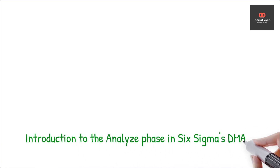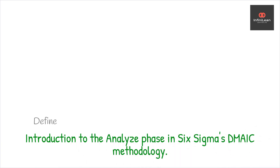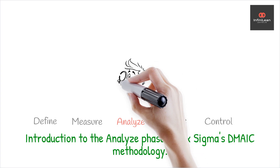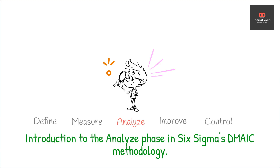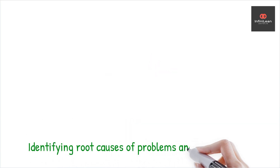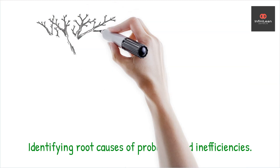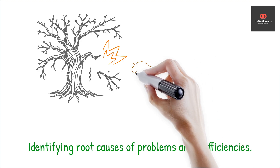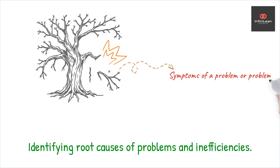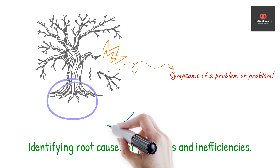Welcome to our deep dive into the Analyze Phase of Six Sigma — this is where the rubber meets the road in our journey to process excellence. The Analyze Phase is the third step in the DMAIC methodology. During this phase, we focus on identifying the root causes of problems and understanding why defects occur. The primary goal is to pinpoint the underlying reasons for inefficiencies and variabilities within a process.